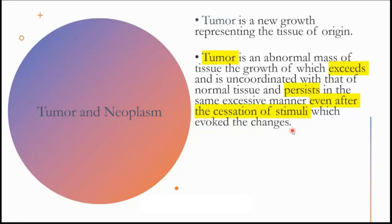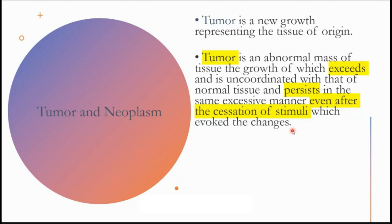Sometimes there is hyperplasia and hypertrophy of tissue as a reaction to something, but when you remove that stimuli it stops — the hypertrophy regresses, the hyperplasia regresses and it goes back to normal. But a tumor is not like that — the division continues, the hyperplasia continues even after you remove that stimuli. So that's the definition. A neoplasm is nothing but the tumor itself — it continues to grow indefinitely, and that can be called a neoplasm. You have both benign and malignant types.